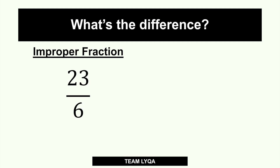An improper fraction is a fraction where the number on top is higher than the number on the bottom — which kind of defeats the purpose of a fraction. It means it's 23 parts where one whole is divided into 6 parts. In a proper fraction, the numerator should be lower than the denominator. When the number on top is bigger, it becomes an improper fraction.